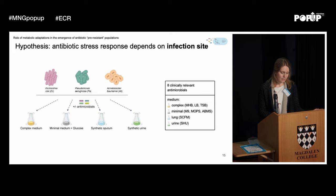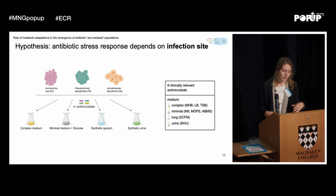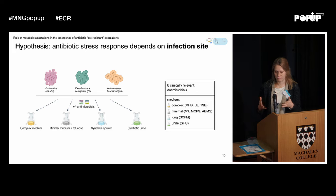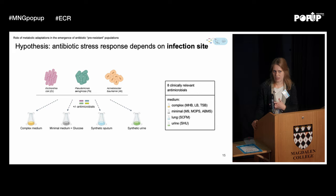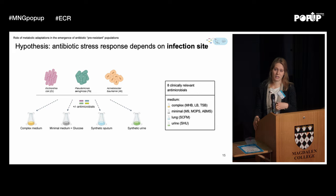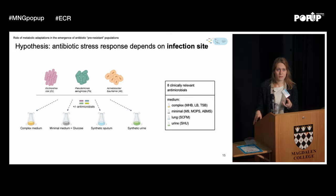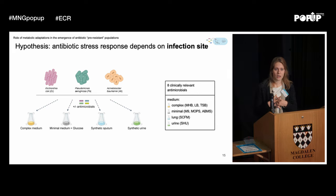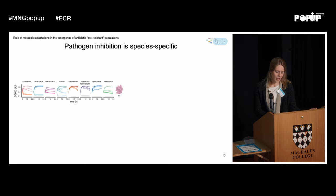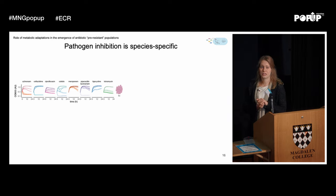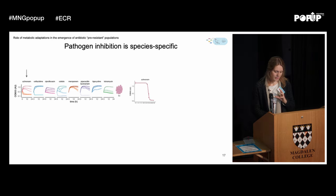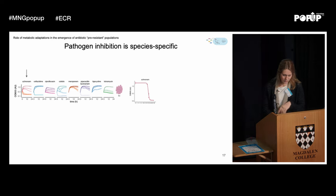The way we did this is by using different media, because here we can control what nutrients are present and what the pH is. We use standard laboratory media like LB or minimal medium, but we also use infection-mimicking media — something we call synthetic sputum and synthetic urine — where the metabolite and nutrient composition is very similar to what bacteria might encounter when infecting the lung or the urinary tract. We ended up using eight different clinical antimicrobials, selected based on what is currently in use against these three priority pathogens. With this dataset, we wanted to figure out what's happening once they start to see antimicrobials.